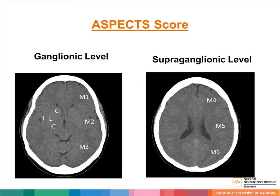The ASPECTS score, also known as the Alberta Stroke Program Early CT Score, is a commonly used 10-point quantitative topographic score used in patients with middle cerebral artery stroke. Based on the regions involved, as shown in this slide, one point is deducted from an initial score of 10 for every region involved. A low resulting score is a poor score, whereas a high score is a good score.